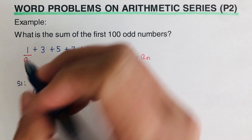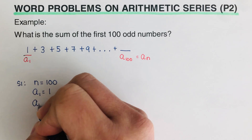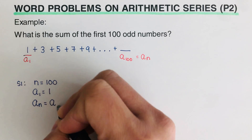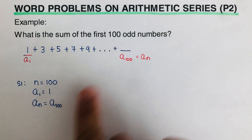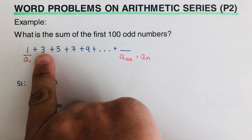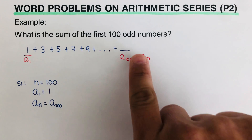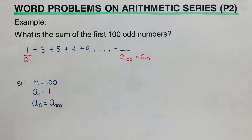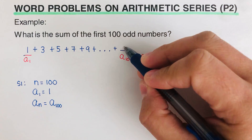Next we determine a sub 1, the first term — that is 1. Then we need to determine a sub n, which equals a sub 100, because that is the 100th term. But we don't know that value yet. The sequence is 1, 3, 5, 7, 9, 11... all the way to the 100th term, so we need to solve for it.